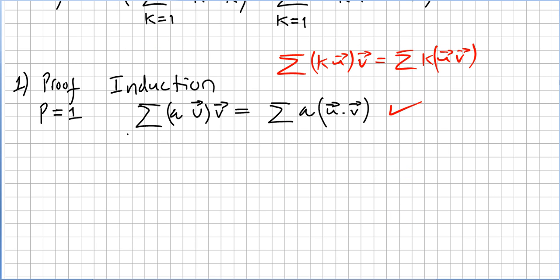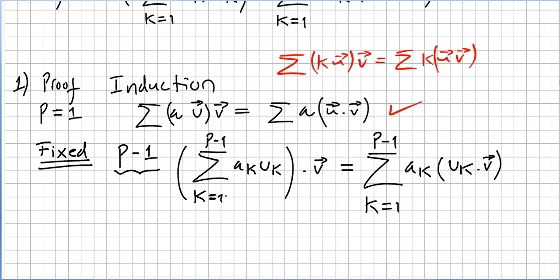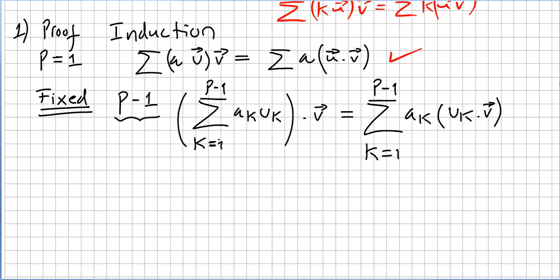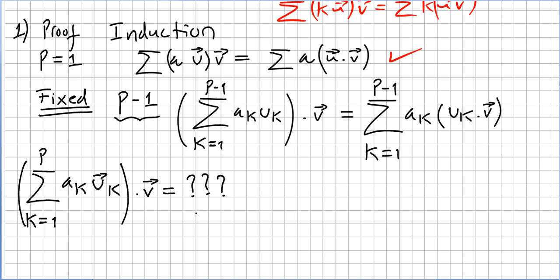Since it is true for p equals 1, let us admit that this is true for p minus 1 — for a fixed p minus 1. So for p minus 1 we would have the sum from k equals 1 to p minus 1 of ak·uk, dotted with the fixed vector v, equal to the sum from k equals 1 to p minus 1 of ak times (uk · v). Now, is this true for p?